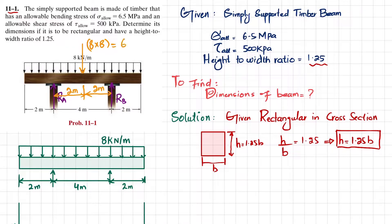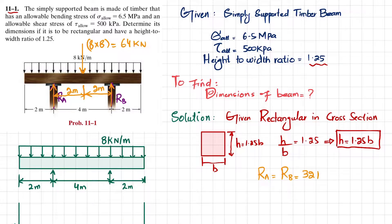The total point load is 64 kilonewton. Since this load acts at the midpoint, the loading is symmetrical, so Ra equals Rb equals 64 divided by 2, which equals 32 kilonewton. You can also apply equilibrium conditions to verify this result.